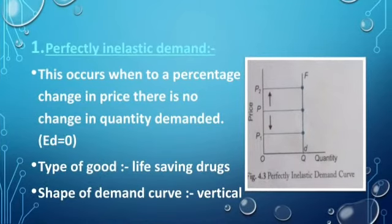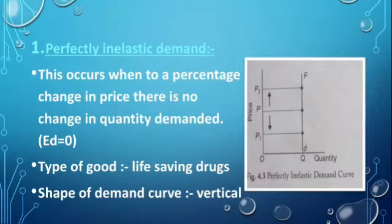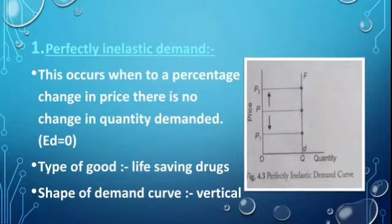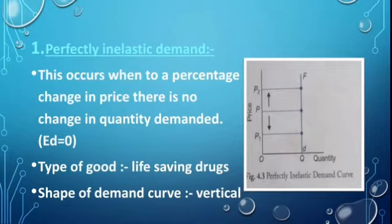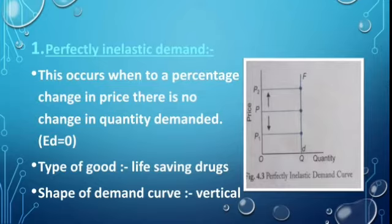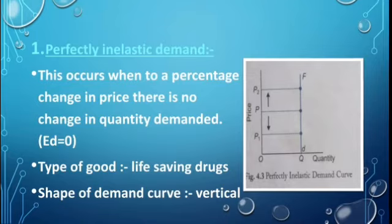Elasticity ko measure karne ke liye 5 degrees hai humare paas. Pehli hai perfectly inelastic demand. Perfectly inelastic demand ke case mein, jo aapka ED yani ki elasticity of demand hai, uski value humesh zero hoti hai. This occurs when to a percentage change in price, there is no change in quantity demanded. ED equals to zero.